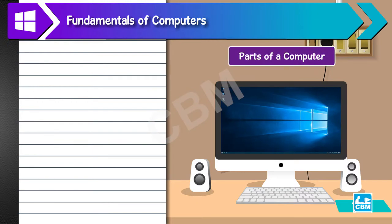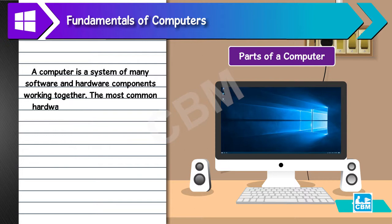Parts of a computer: A computer is a system of many software and hardware components working together. The most common hardware in a desktop computer system are as follows.